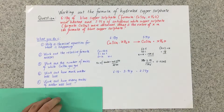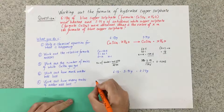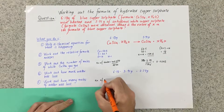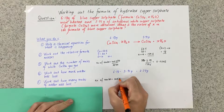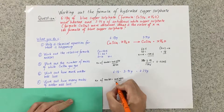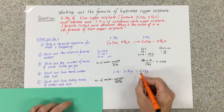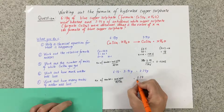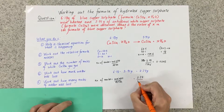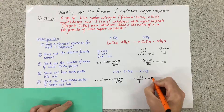Next part: work out how many moles of water were lost. We use the same formula again — number of moles is the weight divided by the relative formula mass. So the weight we just worked out is 2.27, and we divide it by the relative formula mass of water, which is 18. When we put that through our calculator, the answer is 0.126.